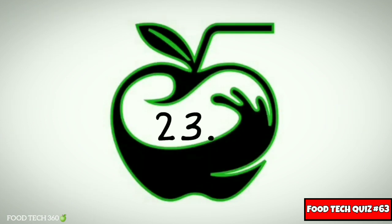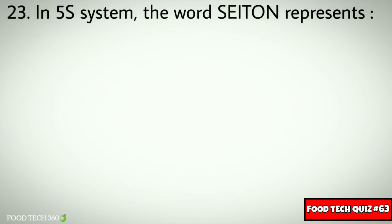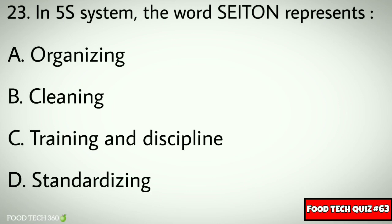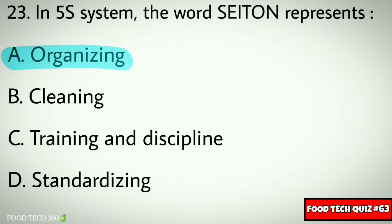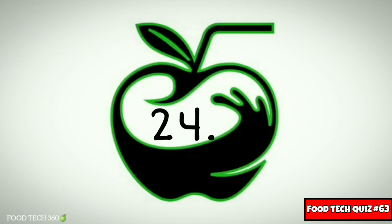Question No. 23. In the 5S system, the word SEIRI represents: Options: A. Organizing, B. Cleaning, C. Training and Discipline, D. Standardizing. Correct answer: A. Organizing.